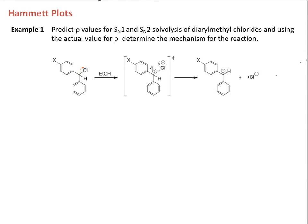In this problem, we are supposed to predict the rho value for SN1 and SN2 solvolysis reactions. A solvolysis reaction is an SN1 or SN2 reaction that takes place in a polar protic solvent. In this case, the solvent is going to be ethanol. In an SN2 reaction, ethanol is going to react directly as a nucleophile, and in an SN1 reaction, the ethanol is going to react with the intermediate carbocation. In both cases, we're going to make an ethyl ether product.